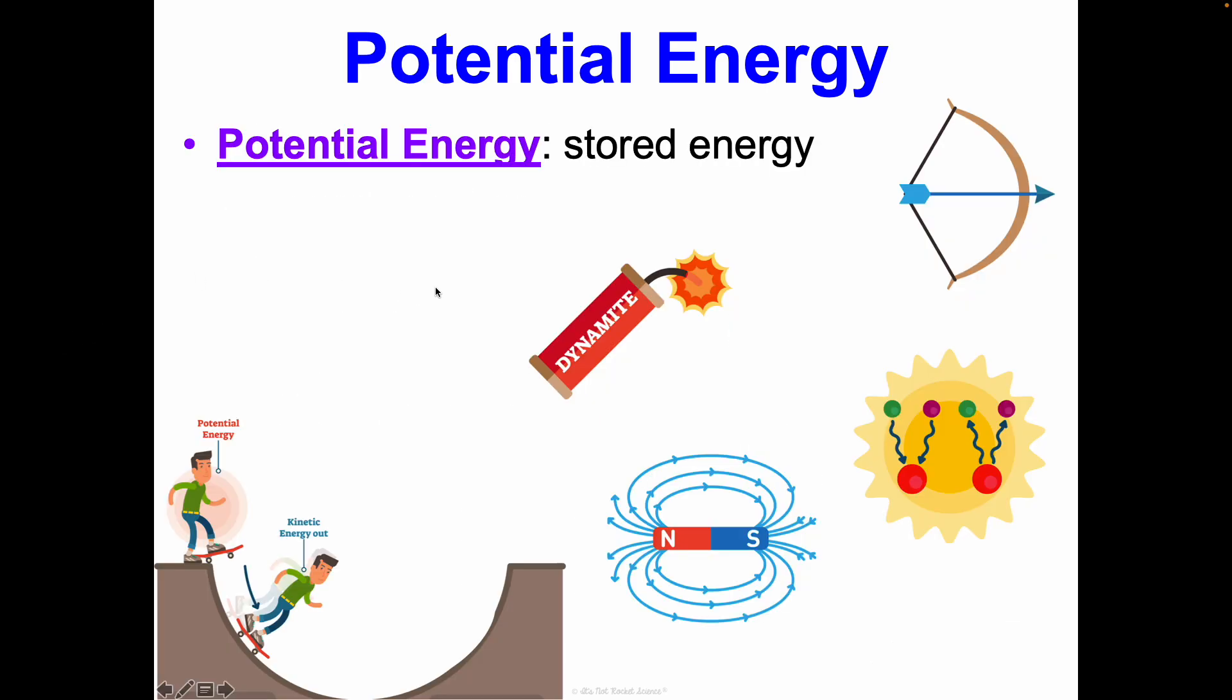Now potential energy is that stored energy. So a couple of examples of this, elastic, we see this like in a bow and arrow when we're pulling something back, there's this stored energy. It's in a slingshot too, or a slinky. When things are compressed or stretched, they have this elastic potential that can then be converted into kinetic when that object can then move.